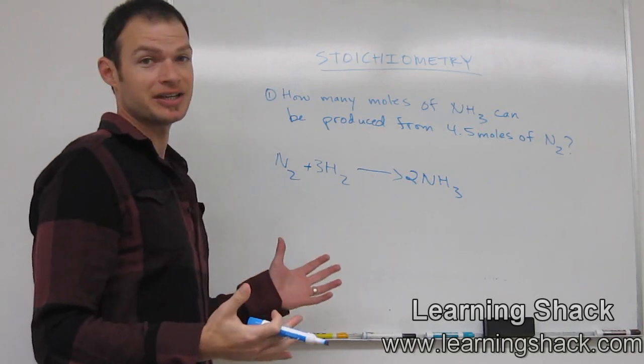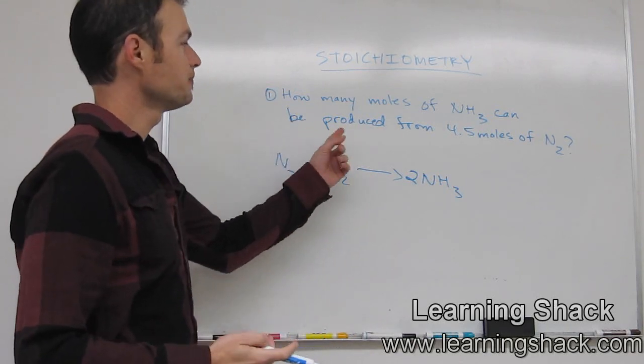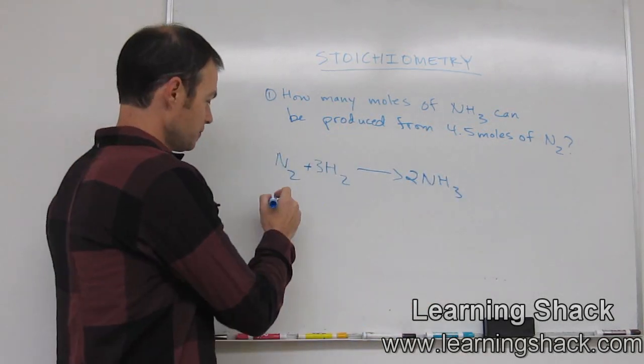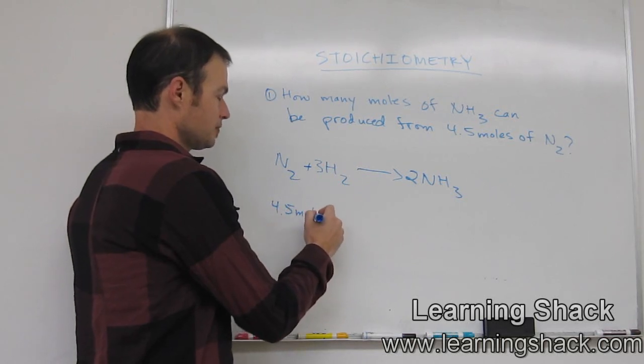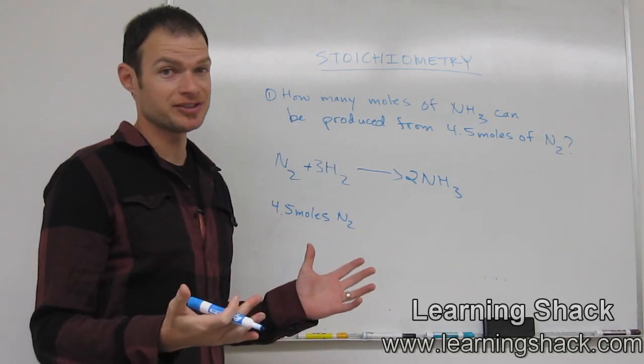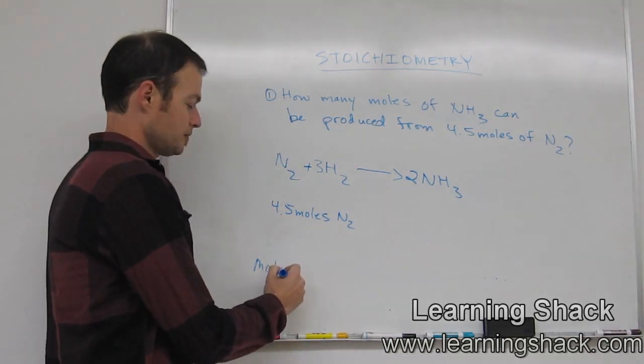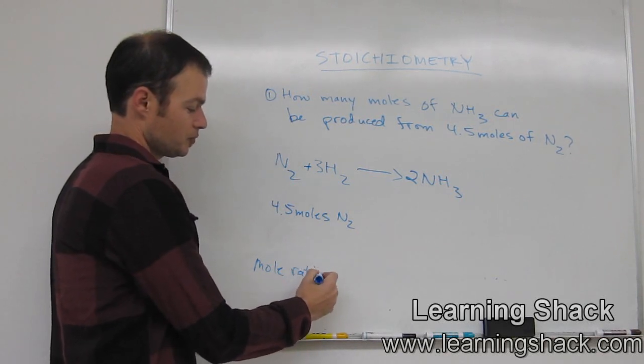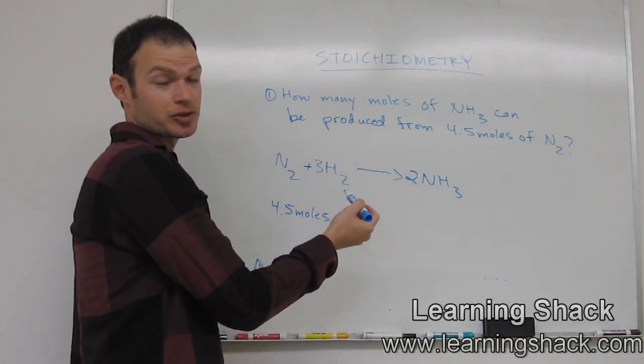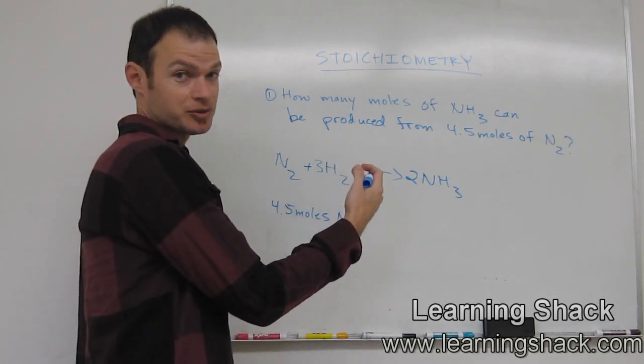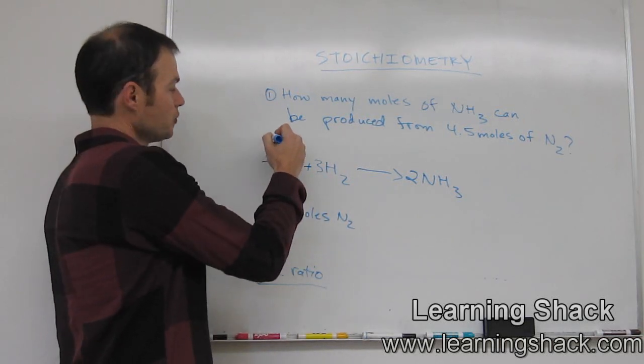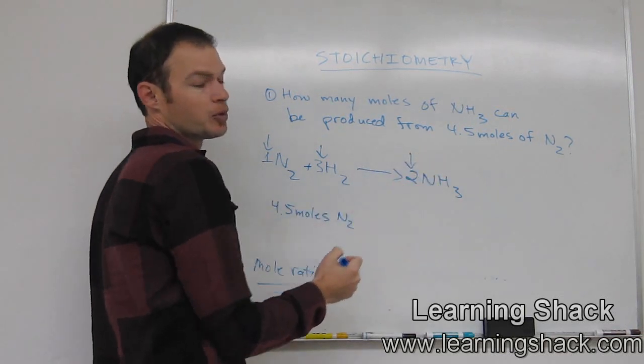The second step would be we're now going to take our given, which says here 4.5 moles of nitrogen, and I'm going to write that down. So you want to write the given down here: 4.5 moles of nitrogen. And then we're going to multiply this times what's called the mole ratio. Now the mole ratio is just the relationship between the coefficients we talked about earlier that we used in our balanced equation. What we did earlier was balance the equation. If there's no number written here, it's like an implied one.